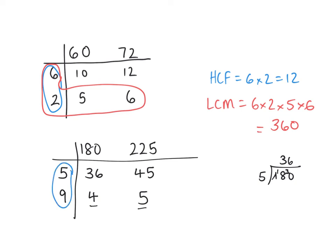So now we've got the highest common factor is 45. And my lowest common multiple is 5 times 9 times 4 times 5 equals 900.